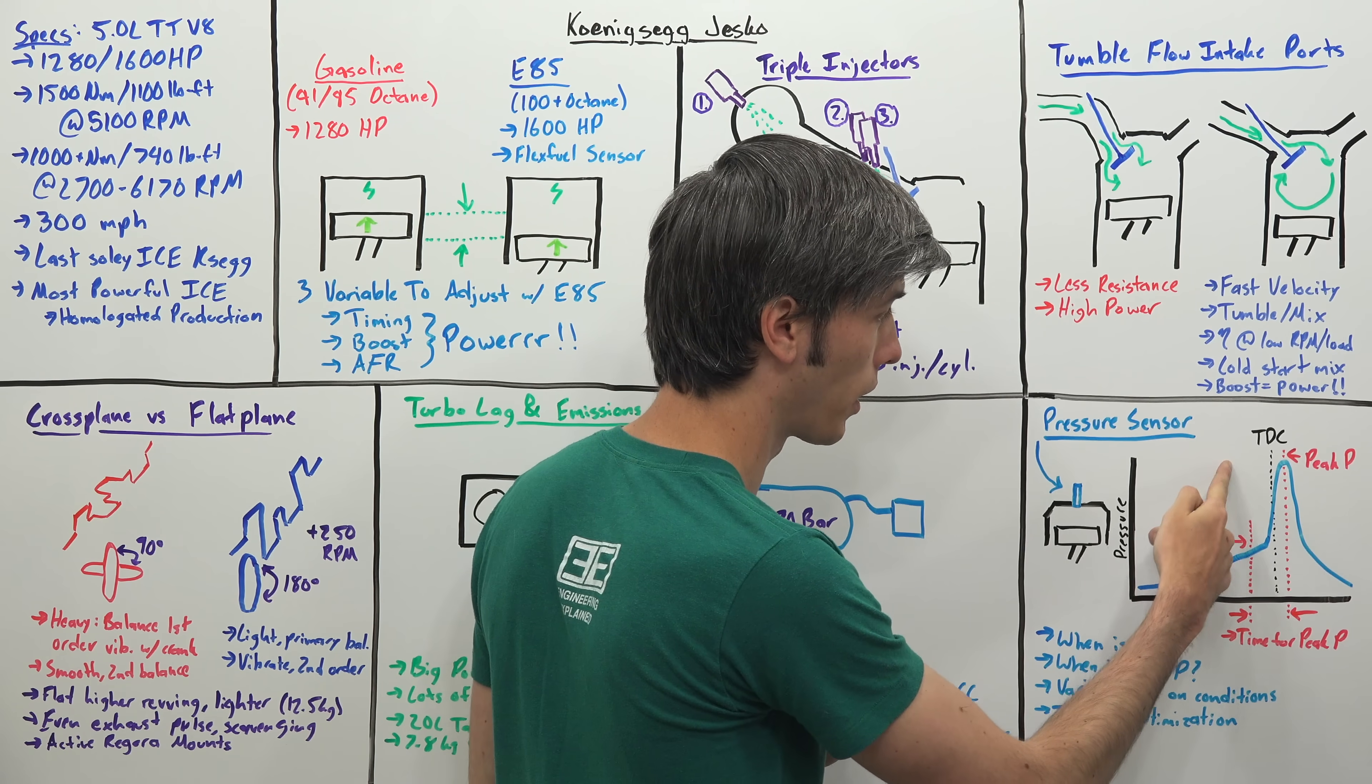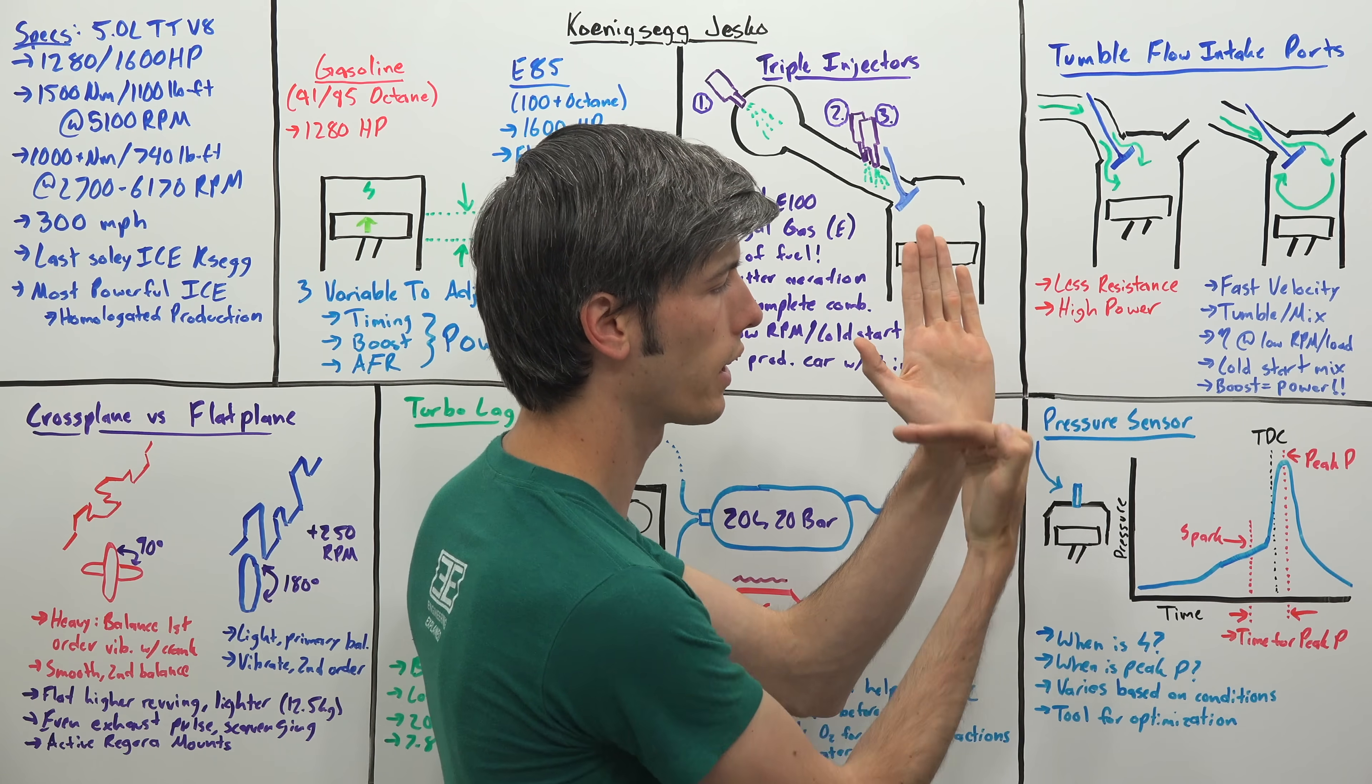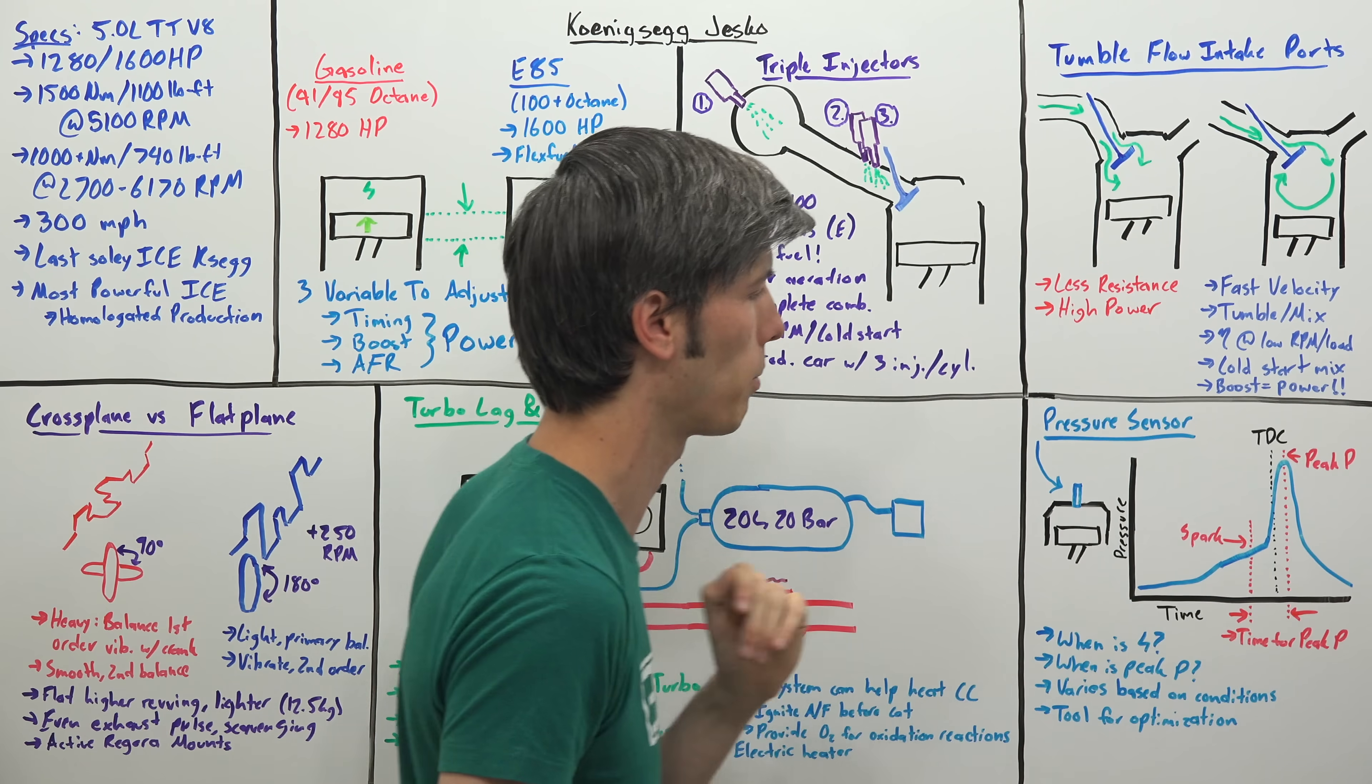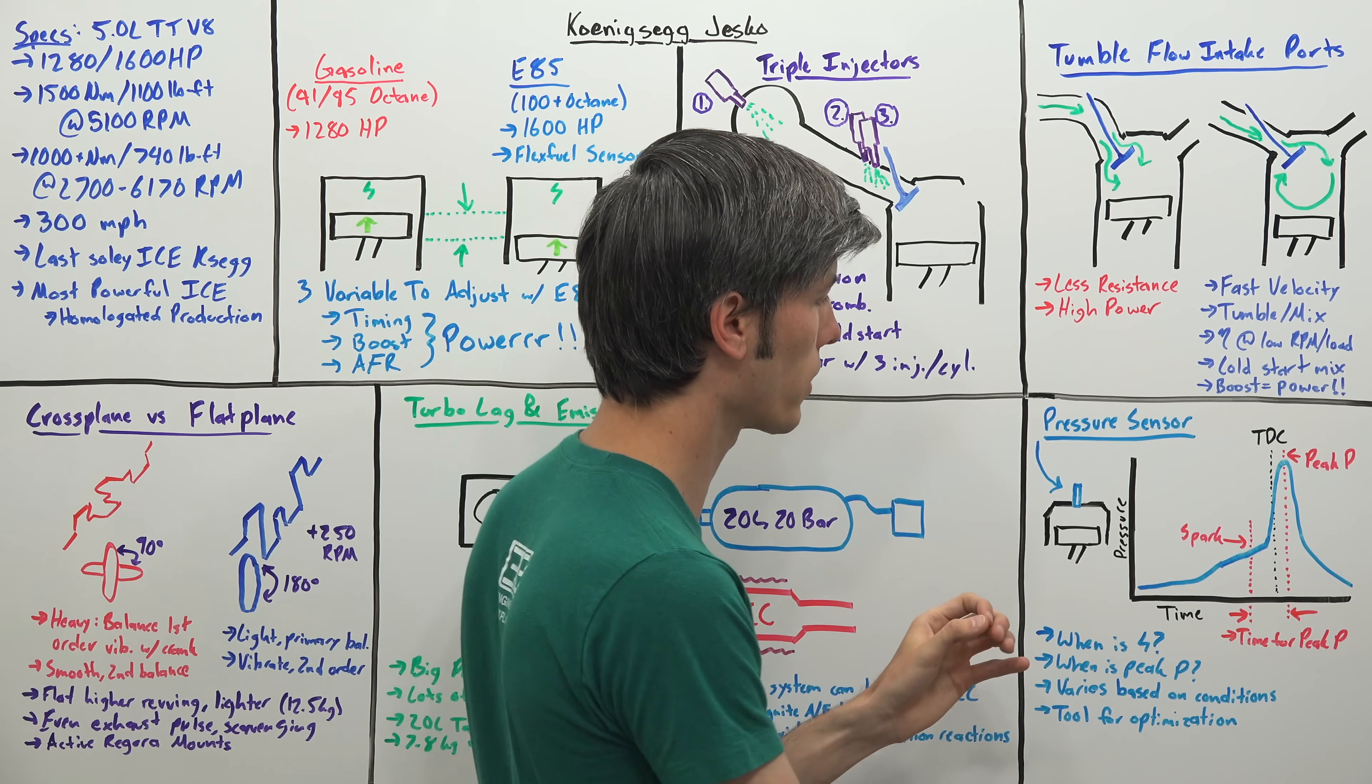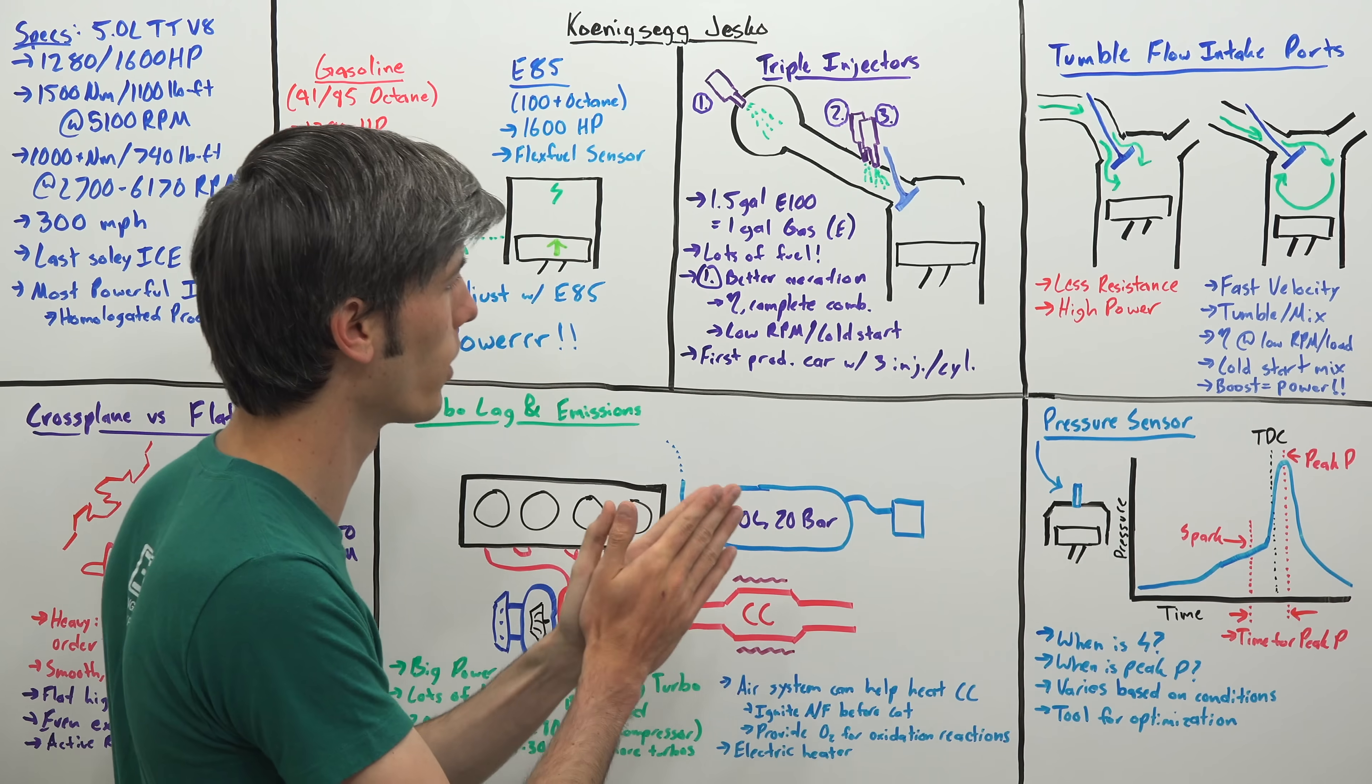The ECU is getting that information, it's getting when did the spark fire and when did peak pressure occur, and it can adjust when it should fire the spark in order to optimize where that peak pressure should have occurred. Of course you don't want peak pressure occurring before top dead center, that means you're pushing the piston down when it's on its way up. You don't want it occurring too late because if the piston's all the way down here then you're not getting that much useful work at it versus if you were to have that occur at the very top and push it all the way down with that peak pressure. It's very critical when peak pressure occurs, and you're able to optimize that using a pressure sensor.